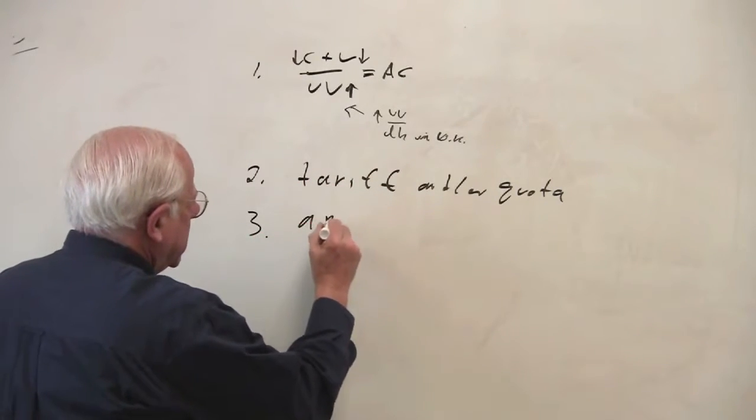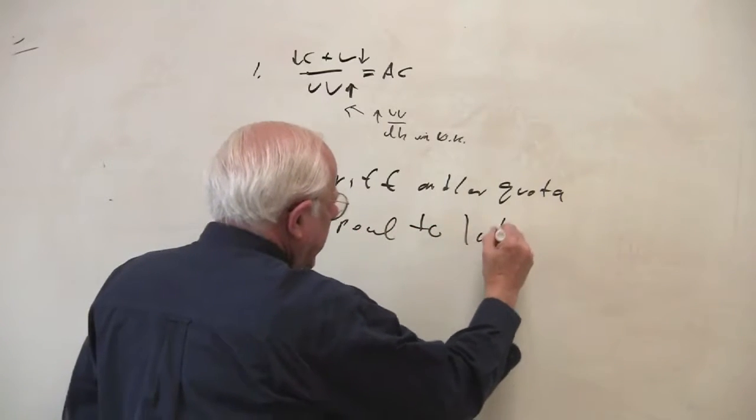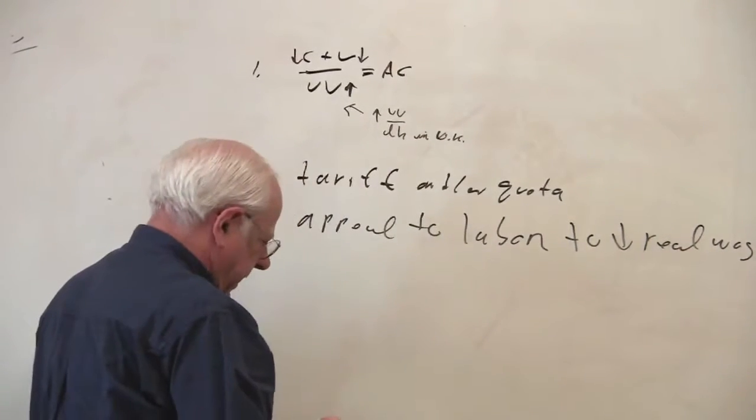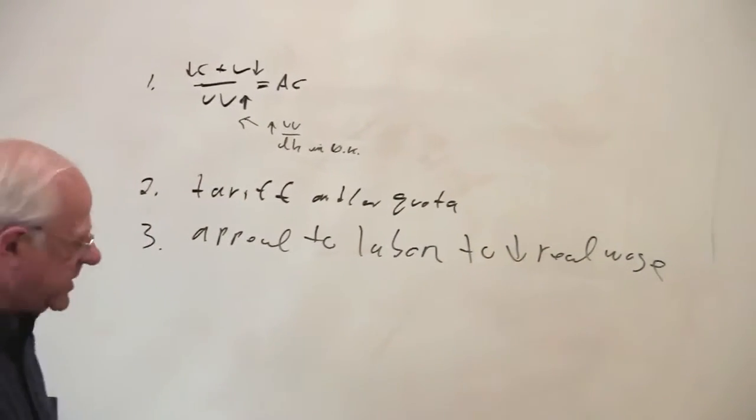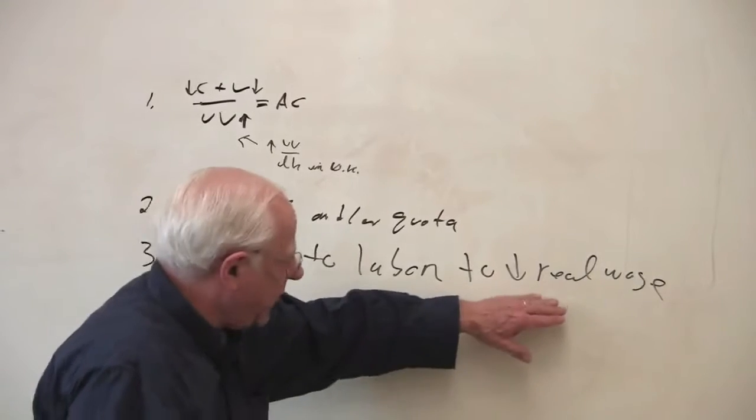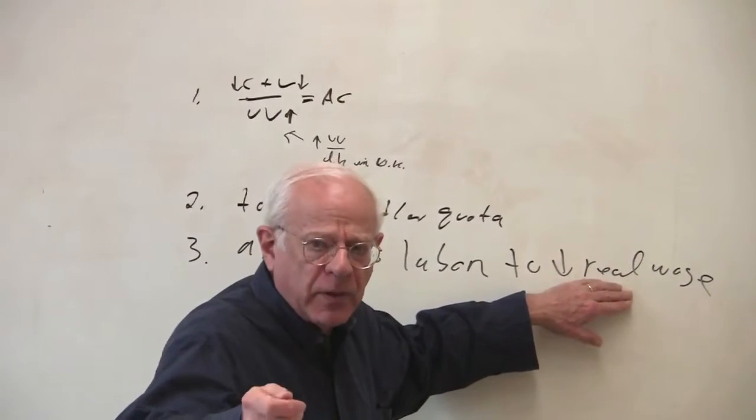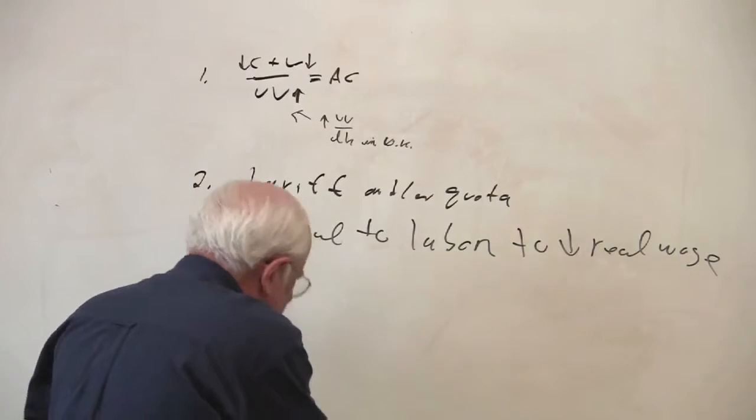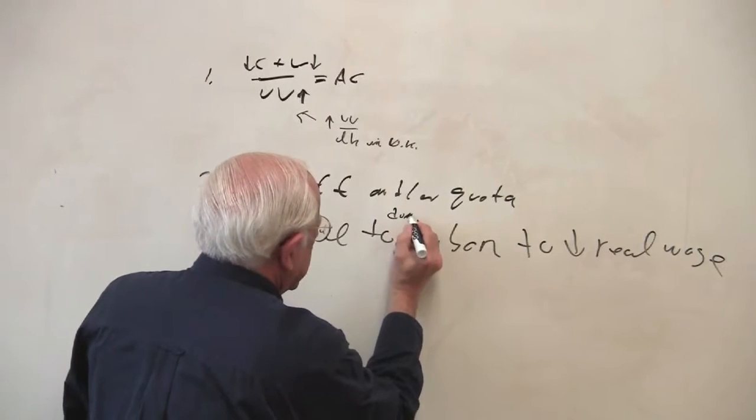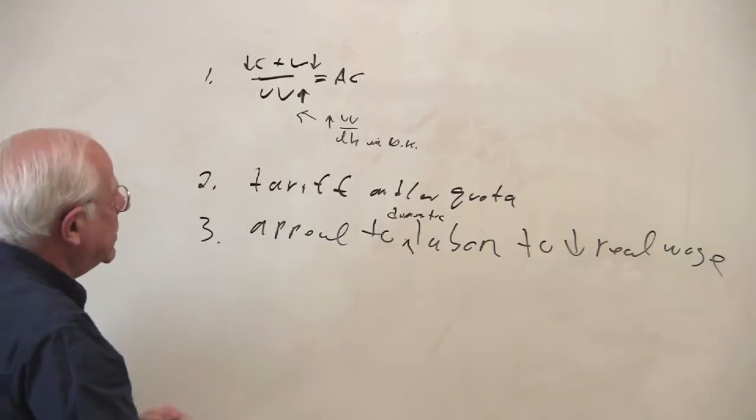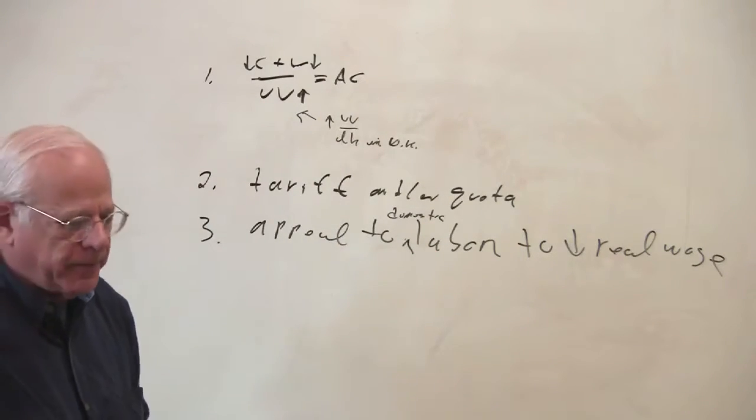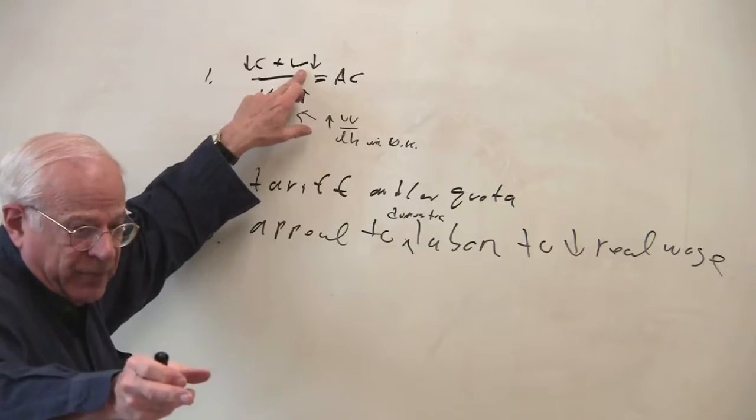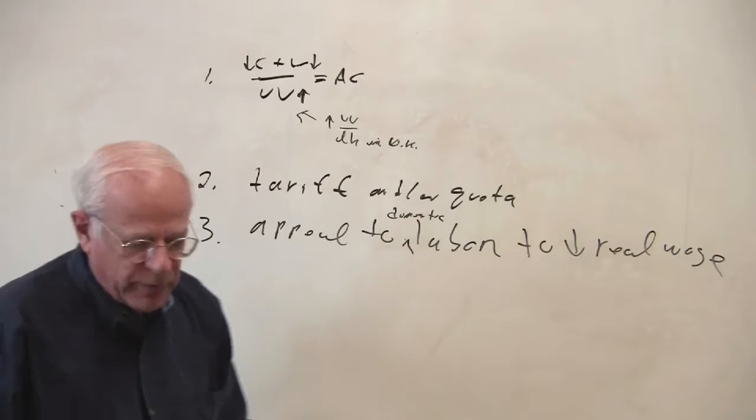Third, there can be an appeal to national labor to cut the real wage. So it's possible that the capitalists, when they sit down with the workers supported by the state and the media may say, look, in order for us to compete, you have to cut your real wage. Cut the V. Cut the real wage part of V. So this is an appeal to domestic labor to cut their real wage to reduce the V so we can compete on the international market. So it's not just a search the world for cheap C and perhaps put plants someplace else but to appeal to domestic labor to decrease their real wage.